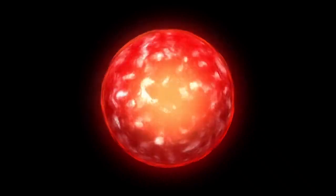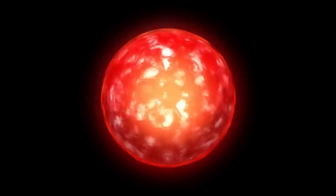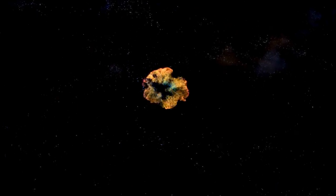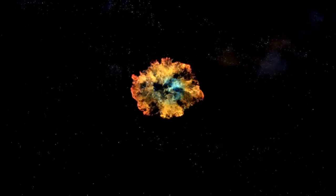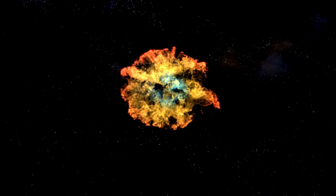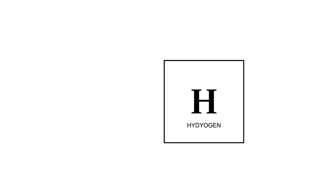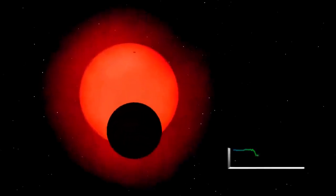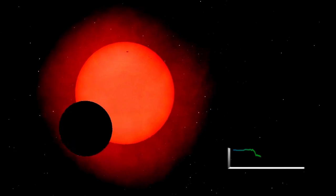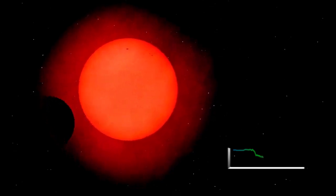In the case of Betelgeuse, a red supergiant nearing the end of its life cycle, this balance has become increasingly unstable. As the star depletes its core hydrogen fuel, the nuclear fusion processes that sustain it undergo significant changes. When hydrogen fusion slows in the core, radiation pressure decreases, causing the gravitational pull to momentarily gain the upper hand. This results in the contraction of the star's outer layers.